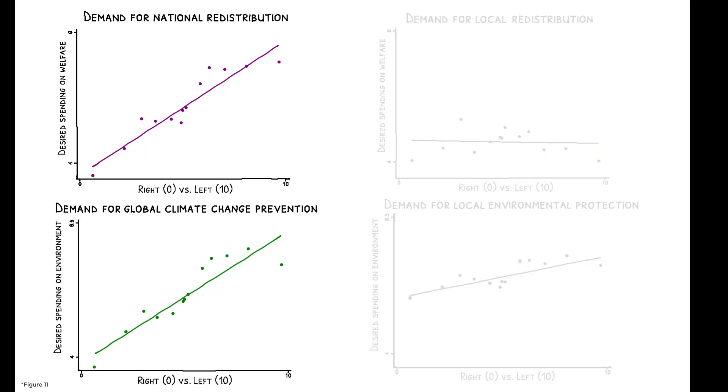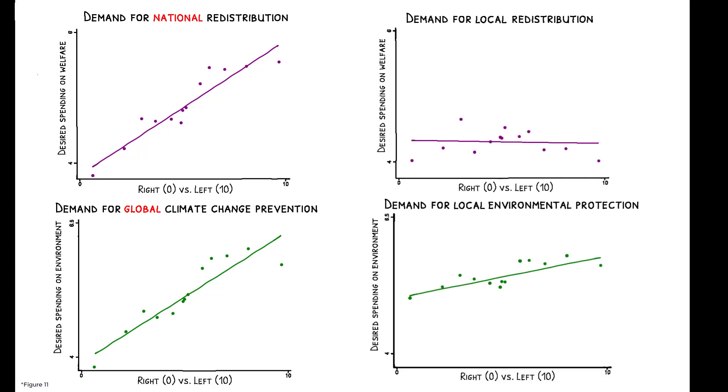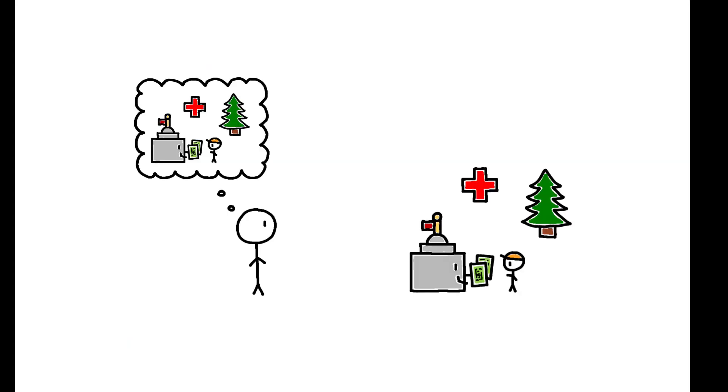This side shows how support for welfare and environmental protection varies with respondents' self-reported ideology. As expected, left-leaning individuals are far more likely to support national redistribution and global climate change prevention, but when these policies are implemented in more communitarian ways, right-leaning individuals become almost as supportive of them. The results are similar for other policy domains, which suggest that people's policy views do depend on how universalist those policies are.